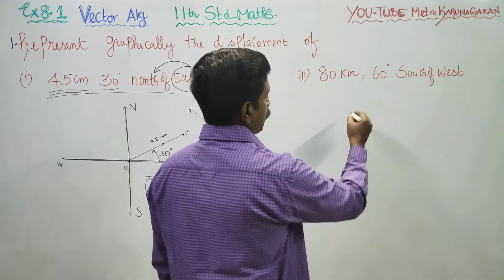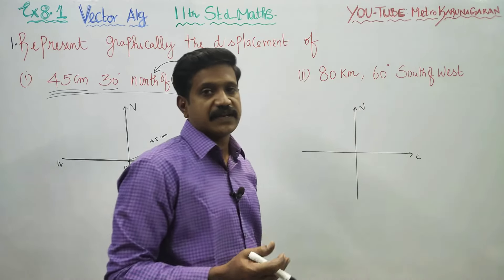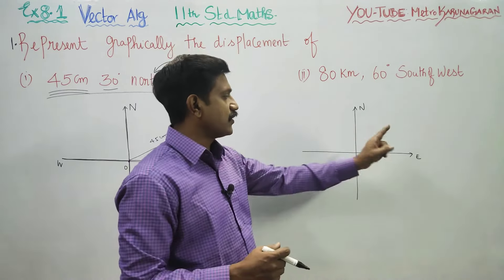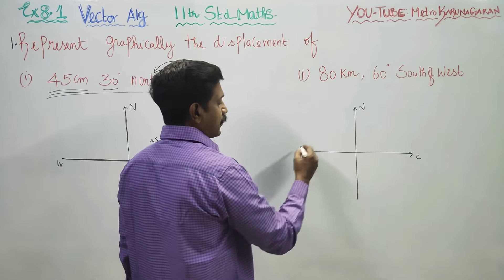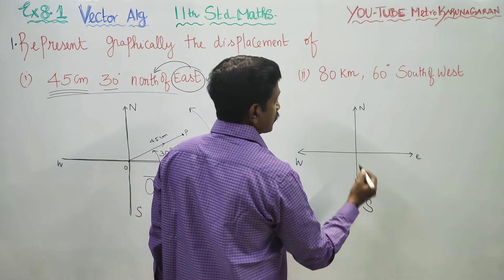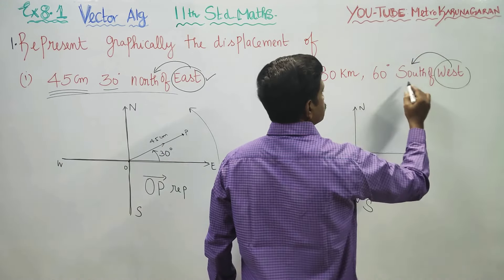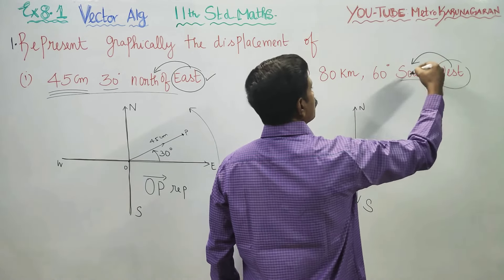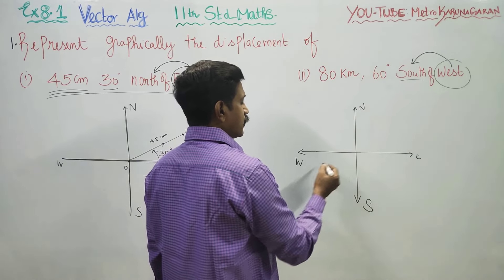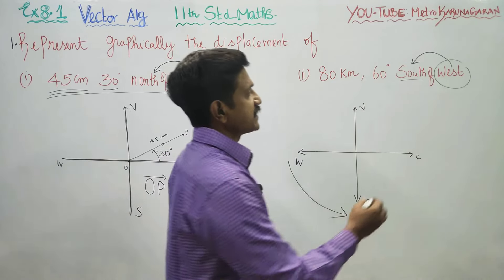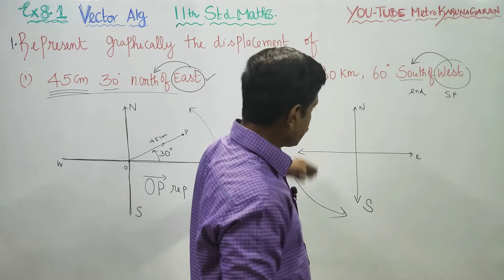80 km, 60 degrees south of west. Again, this is my east and this is my north. You have to start with east and north — that is the rule. After writing east and north, the opposite side is west. South of west means west is your starting direction and you have to move towards south. Starting direction is west, ending direction is south.